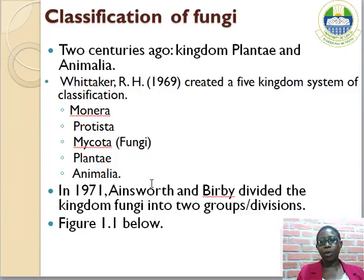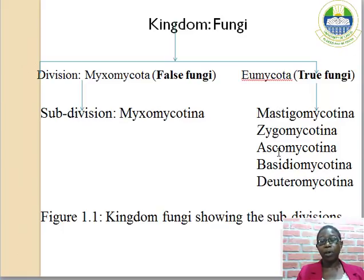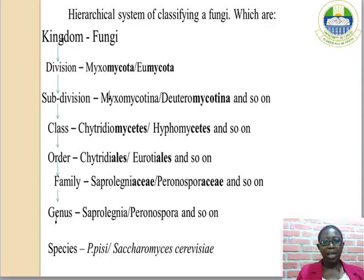In 1971, Ainsworth, Watt, and Vibe divided the kingdom Fungi into two groups: the division Myxomycota and Eumycota. The Myxomycota are known as the false fungi because their cell wall does not contain chitin and is not properly defined, while the Eumycota are termed the true fungi. Under the Eumycota, we have five subdivisions which we shall look at in subsequent classes. In the hierarchical system of classifying a fungus, you have the kingdom, division, subdivision, class, order, family, genus, and species, where the organism has its specific name.